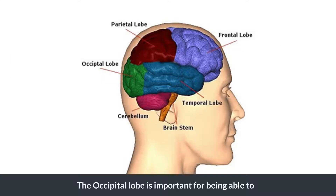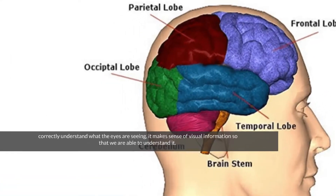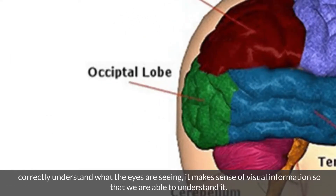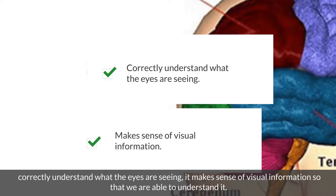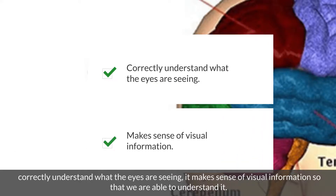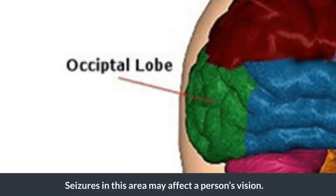The occipital lobe is important for being able to correctly understand what the eyes are seeing. It makes sense of visual information so that we are able to understand it. Seizures in this area may affect a person's vision.